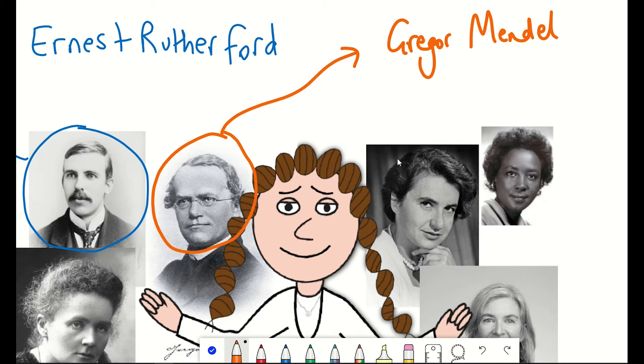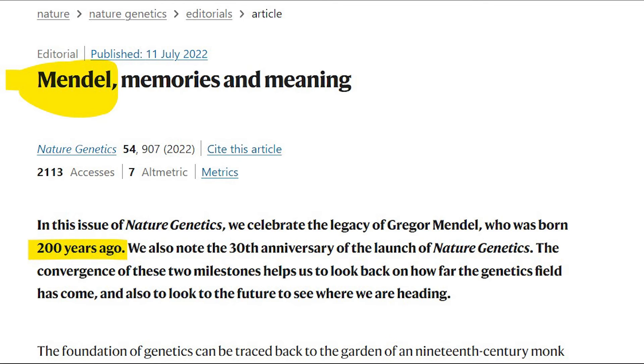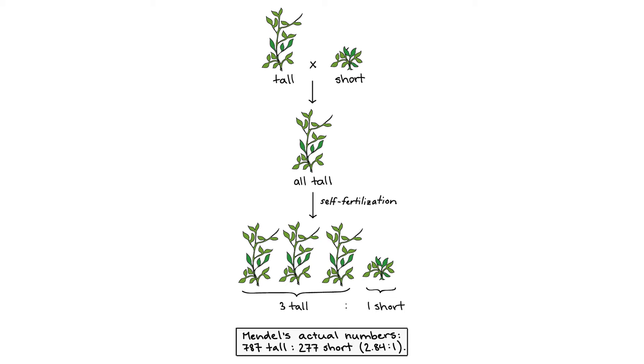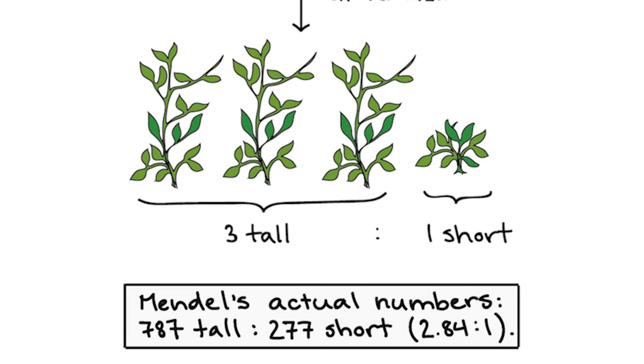And who better to look at than Mendel, since it's now been 200 years since his discoveries? Gregor Mendel, through a series of cross-breeding experiments in pea plants, showed that traits can be inherited, and that they were inherited by elements or determinants. There was no blending of traits.